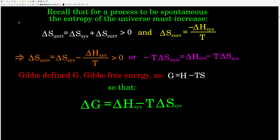And that can happen sometimes if the entropy of the system decreases, depending upon relative magnitudes of the entropy changes. So the delta S of the universe is equal to the delta S of the system plus the delta S of the surroundings, and that has to be positive for something to happen spontaneously.